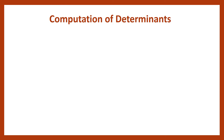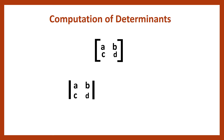Now let us see how to find the determinant value of a matrix. Suppose a 2 by 2 matrix is given with elements A, B, C, D. Since it is a square matrix, we can find its determinant value. The determinant of A, B, C, D is found using a simple formula: A into D minus B into C. On computing A×D minus B×C, we get a value, which is the determinant value of that matrix.